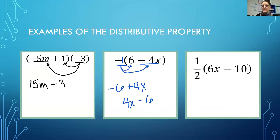Final example: 1 half times (6x minus 10). I'm going to underline my minus 10 and think of it as a negative. So 1 half times 6x, 1 half times 10.